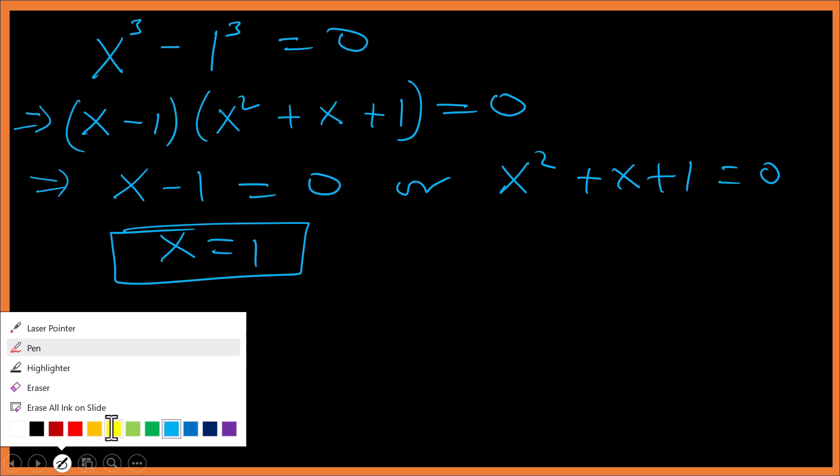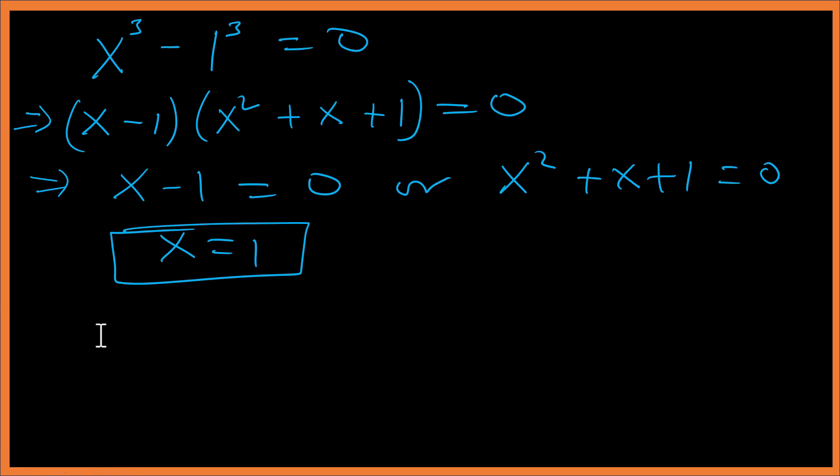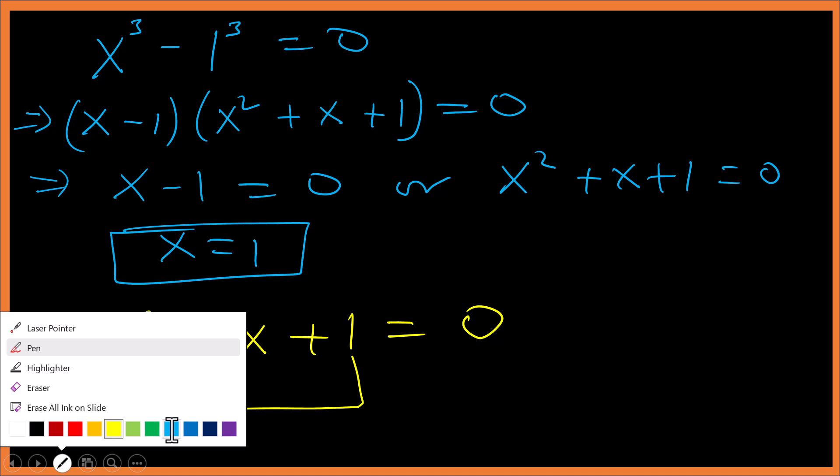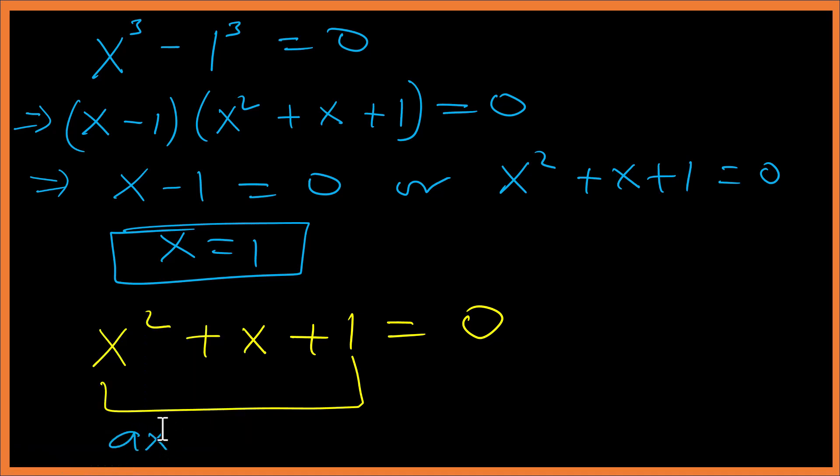Let's look at the other solutions. x² plus x plus 1 equals zero. Let's compare this with the general quadratic equation ax² plus bx plus c. So a is 1.